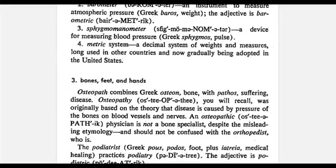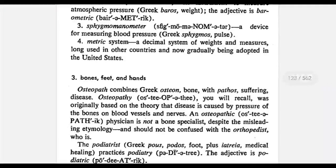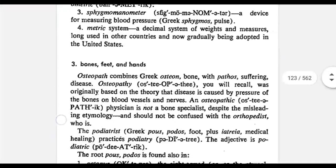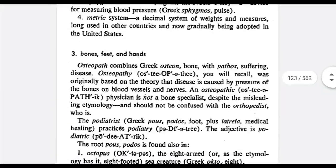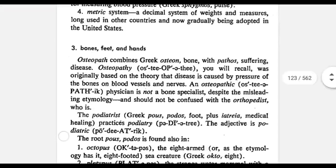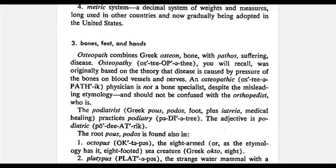A barometer is an instrument to measure atmospheric pressure. The next is sphygmomanometer, which has the root sphygmos, meaning pulse — so it is a device for measuring blood pressure. The next is the metric system, which is a system for measurement and weights used mostly all over the world.